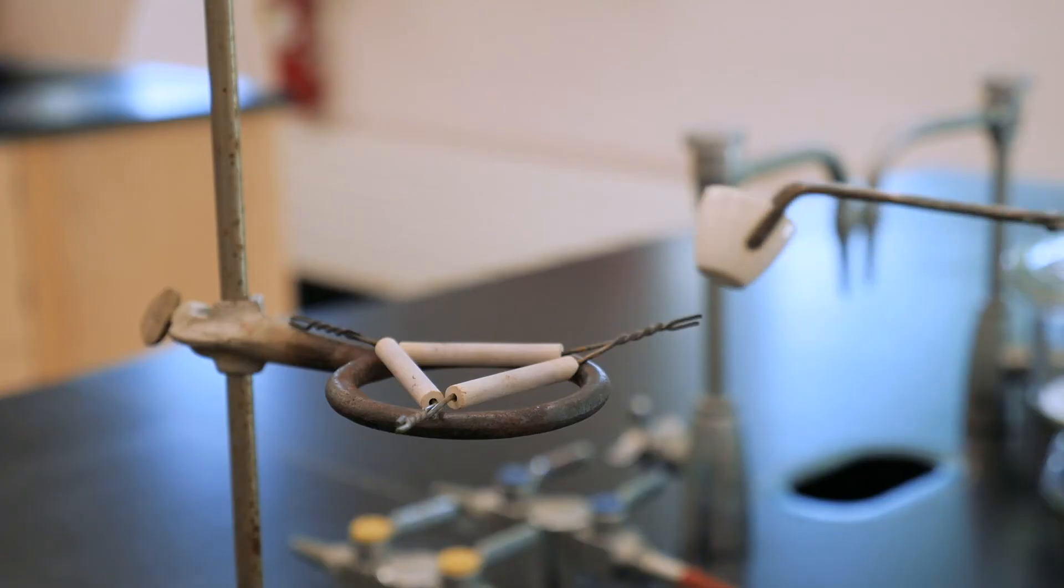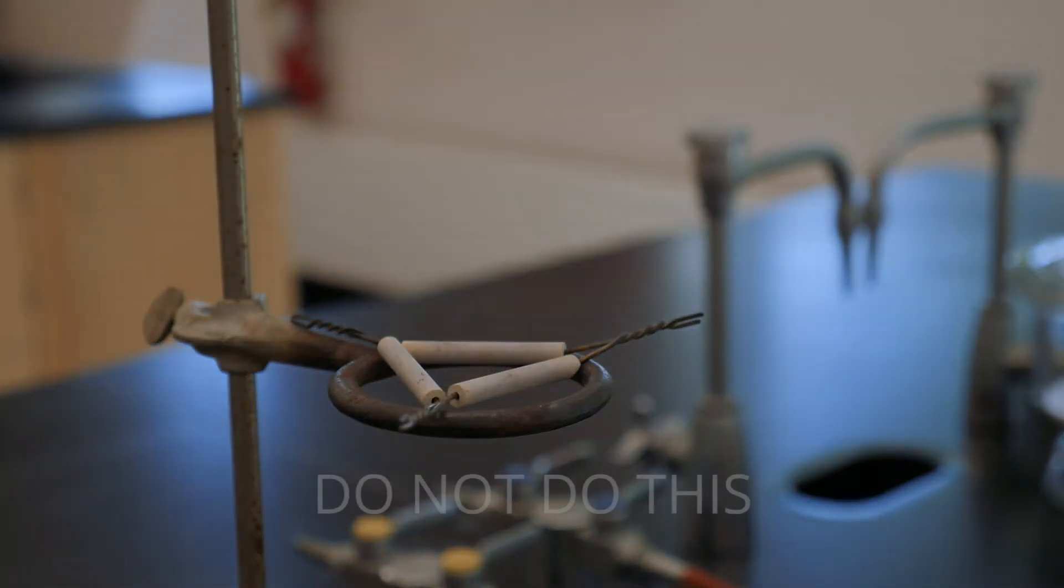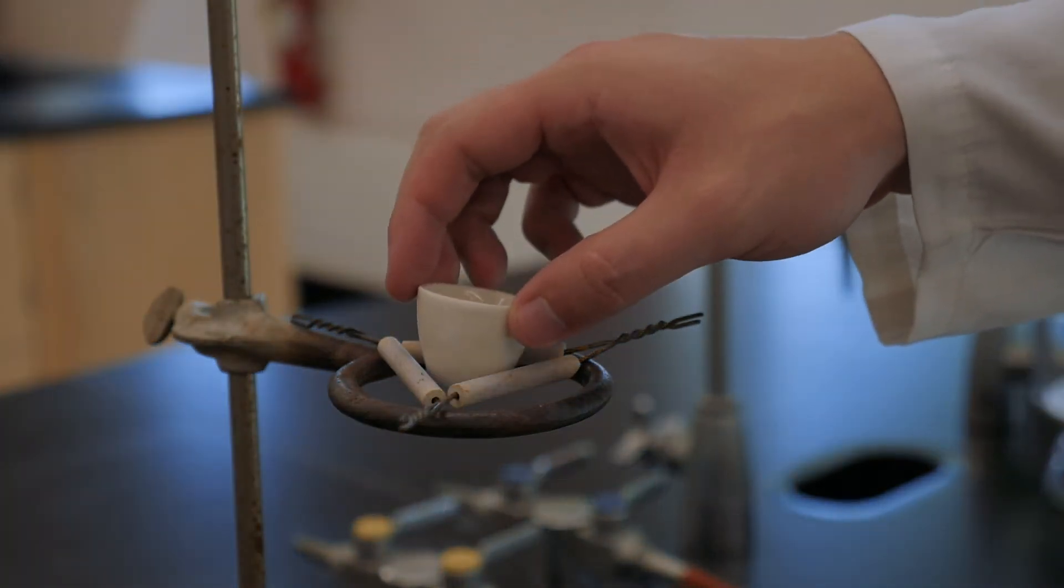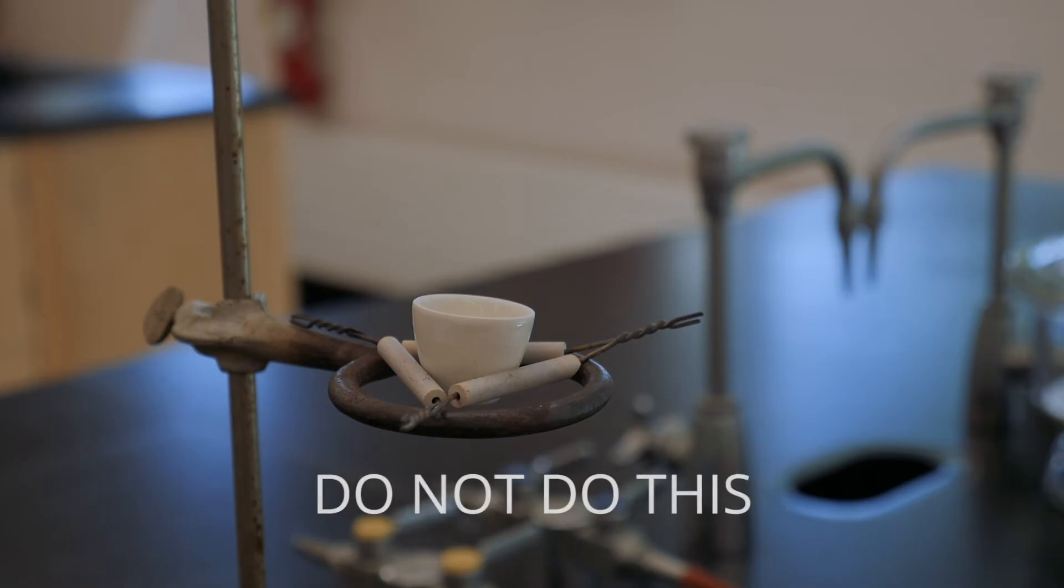Also, it's important to use tongs whenever you handle the crucible, because even the oils from your hands can affect the mass measured on the very precise balances that we'll be using.